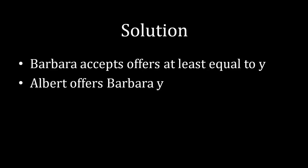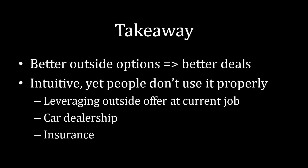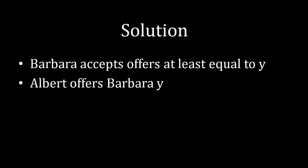This is a very simple game with a very simple takeaway, which is probably intuitive to most people: the better an outside option you have, the better a deal you get. The outside option is defined as whatever the best alternative is to bargaining — in this case, the best alternative for Barbara was to accept a value of Y from somewhere else. Just increasing Y means Albert gives a larger offer to Barbara. The larger Y is, the bigger her outside option, and the more Albert is going to give to Barbara.